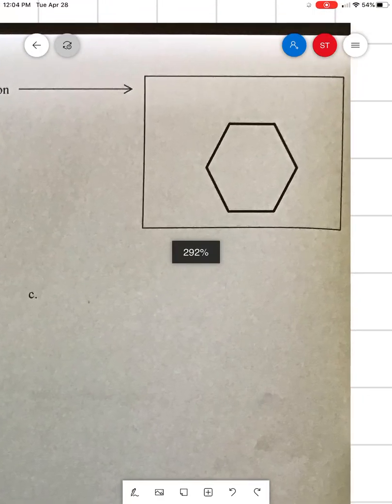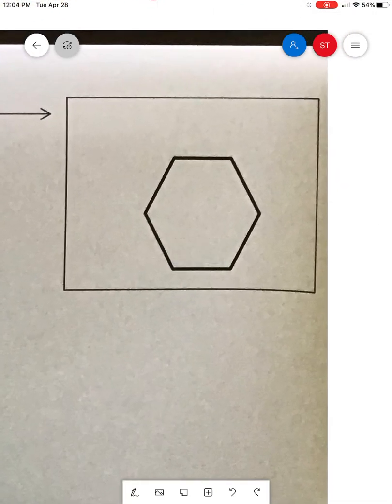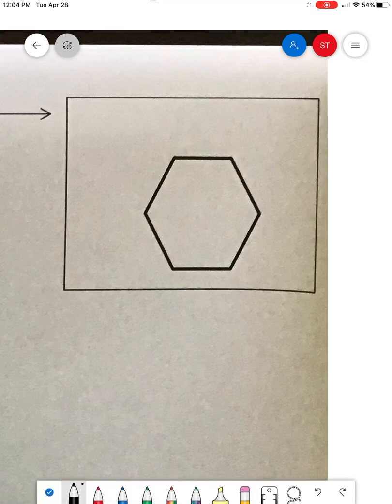But before we could do that, let's zoom in to this right here. Okay, I have a regular hexagon ready to go for you. There's some things you need to know. First off, we're going to put the center of, that's pretty good. Okay, all right, so that's the center of the polygon.